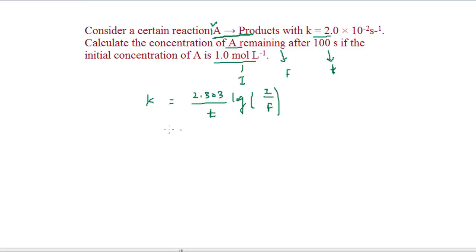K value here, we have 2.0 × 10^-2, and it is per second, equals 2.303, and at the bottom we have time, that is 100 seconds, and here we get log of initial amount 1.0 and final amount, we have assumed that is F.